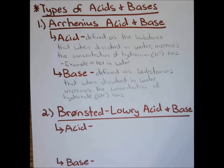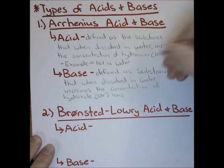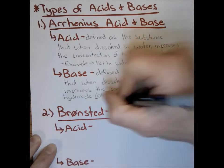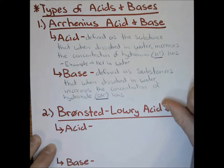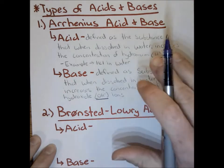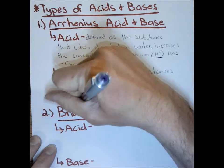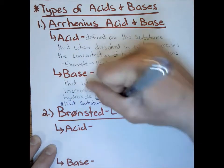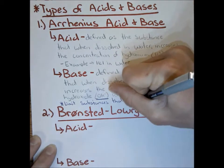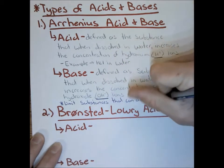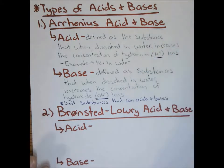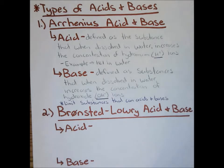The big thing here: to be an Arrhenius acid or base, you need one of two things. For an acid, you must have H+ or hydronium ions; for a base, you must have hydroxide ions. By defining acid and base this way, Arrhenius limits what substances can qualify, since many things lack a hydroxide ion and therefore cannot be defined as an acid or base under the Arrhenius definition.